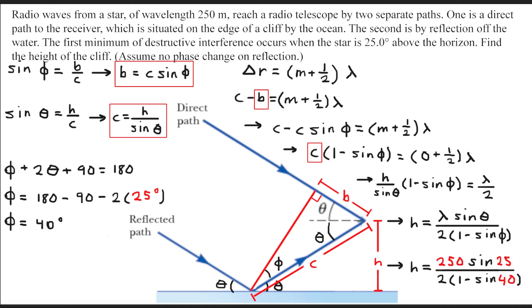We now have enough information to solve for the height. We plug in the values and get that the height of the cliff is 148 meters.